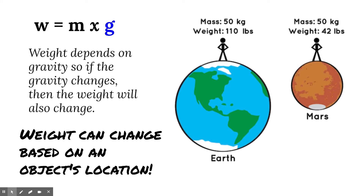Here on Earth, an object with a mass of 50 kilograms has a weight of about 110 pounds — that's the English system. We take its mass multiplied by g, the acceleration due to gravity, and we get a weight. That same 50-kilogram mass on Mars would weigh 42 pounds, which tells you that the acceleration due to gravity on Mars is much less than it is here on Earth.